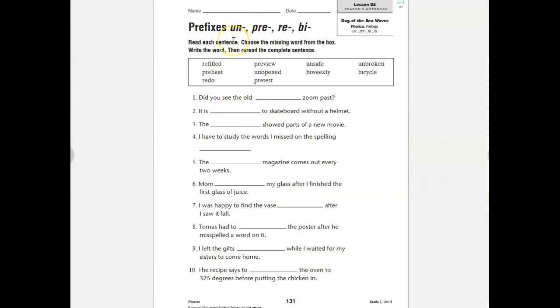The four prefixes that we're looking at this week are un, pre, re, and bi. Let's start with un. The prefix un means not, so let's look at some of our words here. Unopened would mean it's something that's not opened. Unsafe would mean something that's not safe. Unbroken would mean not broken.